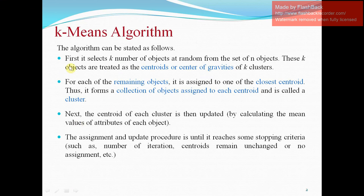First, it selects K number of objects at random from the set of N objects. These K objects are treated as centroids or center of gravity of K clusters. For each of the remaining objects, it is assigned to one of the closest centroids. Thus, it forms a collection of objects assigned to each centroid and is called a cluster. Next, the centroid of each cluster is then updated by calculating the mean and repeatedly. The assignment and update procedure is until it reaches some stopping criteria such as number of iterations and centroids remain unchanged or no assignment.